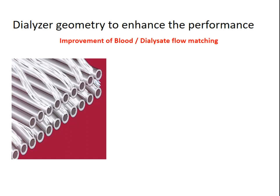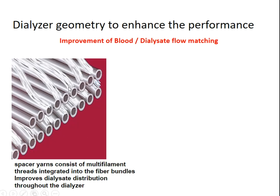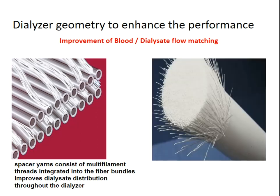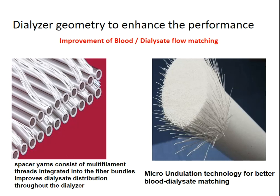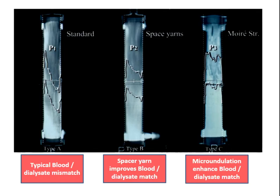Two technologies can improve dialyzer performance through better flow matching. First, spacer yarns between fibers separate adjacent fibers from each other — multi-filament threads integrated into the fiber bundles that improve dialysate distribution throughout the dialyzer. Second, microundulation technology uses non-straight, microundulated fibers for better blood and dialysate matching. Three graphs demonstrate the typical blood-dialysate mismatch, with improvement from spacer yarns and much greater improvement with microundulation technology.